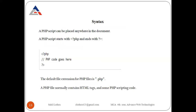A PHP script can be placed anywhere in the document. A PHP script starts with '<?php' and ends with '?>'. The syntax looks like: '<?php' on the first line, then your PHP code goes here — for example an addition program, subtraction, or multiplication — and finally '?>' to close. This is the basic syntax structure.